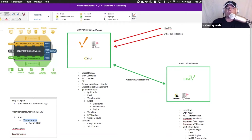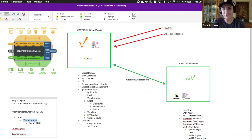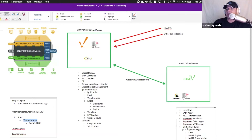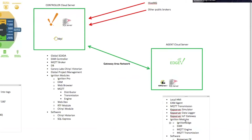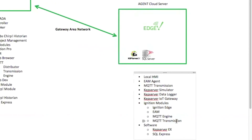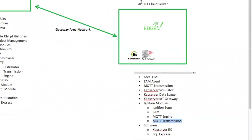So they all kind of work together, though you don't always need them all. With Ignition Edge, we do want engine because we want MQTT tags on the edge, and we do have transmission, but we don't have distributor because we don't need a broker out here.